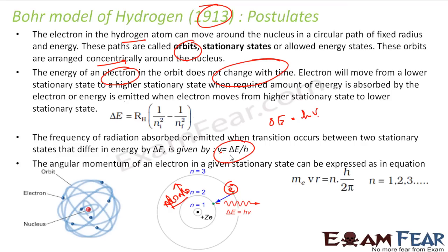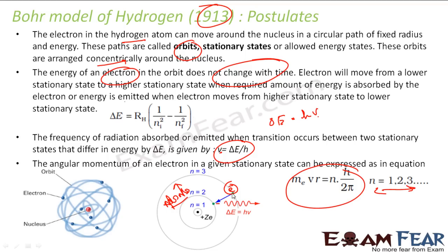The angular momentum of an electron in a given stationary state can be expressed as mvr = nh/2π, where n can have any value of 1, 2, 3, 4... That is the formula for the angular momentum of an electron in a particular orbit.